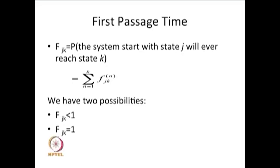Our interest is both the case less than one as well as equal to one. When f_jk equals one, that gives a proper probability distribution, and that distribution is called the first passage time distribution. This case is our main interest — whenever the system starts from state j and reaches state k with probability one, the whole mass is one and this is the distribution of the first passage time.